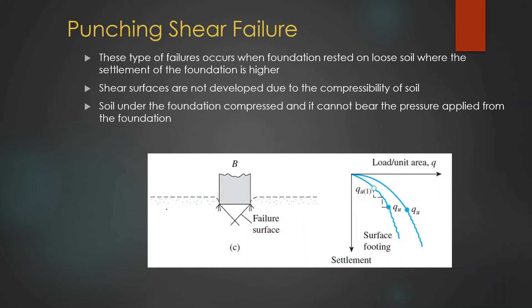Punching shear failure: this type of failure occurs when a foundation rests on loose soil, where the settlement of the foundation is very high. Shear surfaces are not developed due to the compressible nature of the soil. As you can see in this figure, the shear failure plane is not well-developed. The soil under the foundation compresses and cannot bear the pressure applied, and with that this failure occurs.